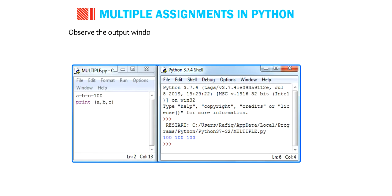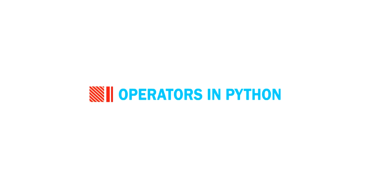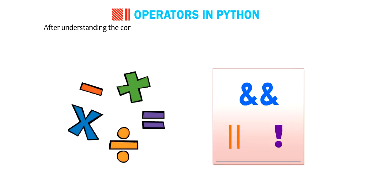This is called multiple assignment. Observe the output window where the value of all the variables is the same. This is because each variable is assigned the same value. Now, let me tell you about operators in Python. After understanding the concept of variables in Python, now let us perform some arithmetic and logical operations on the variables.